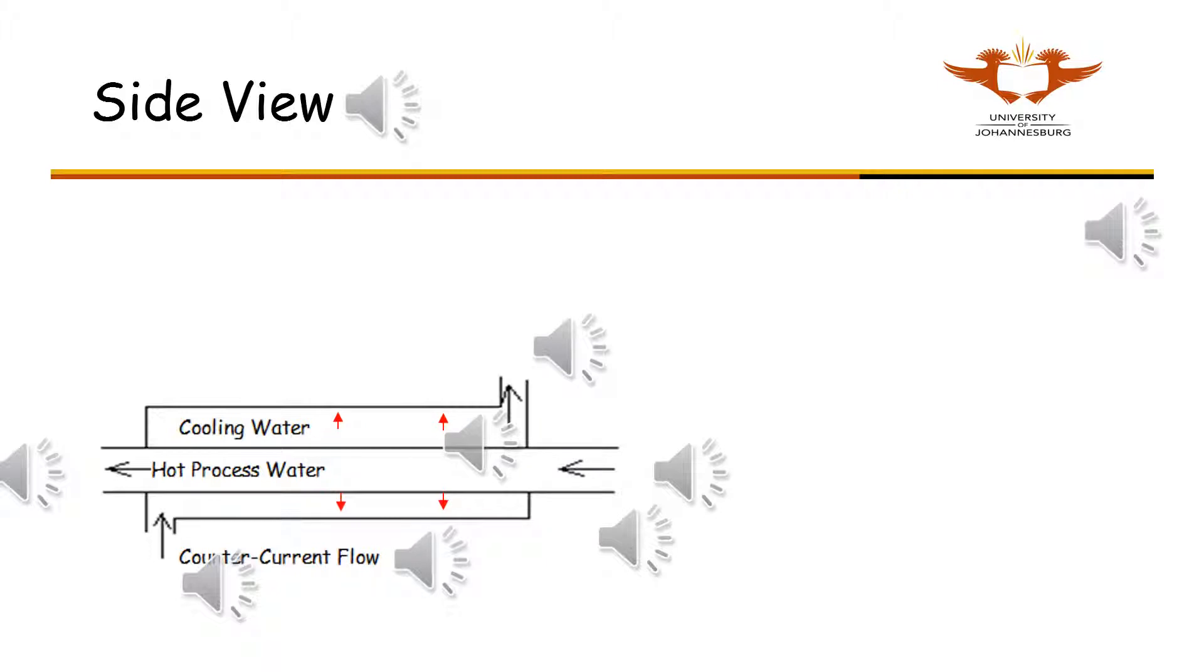This is a side view of the double pipe heat exchanger. The small diameter pipe contains the process water that is being cooled.